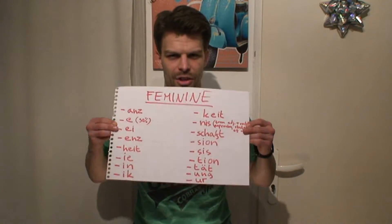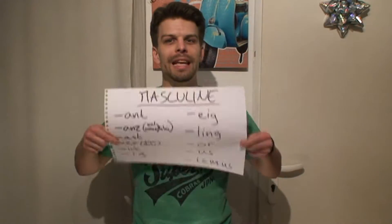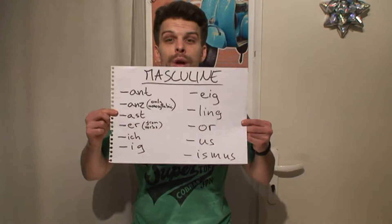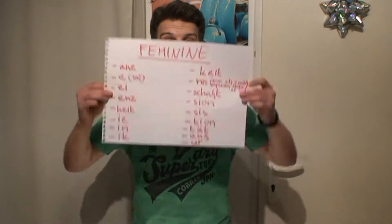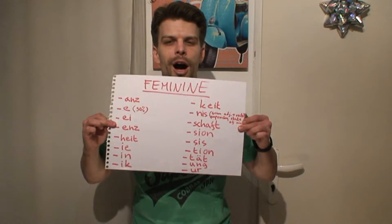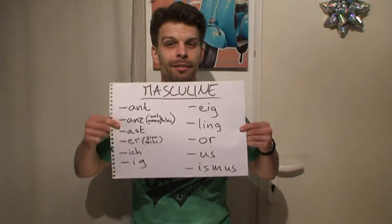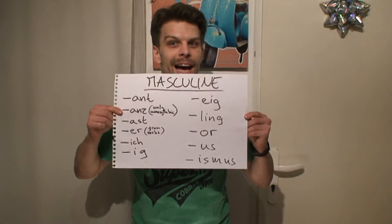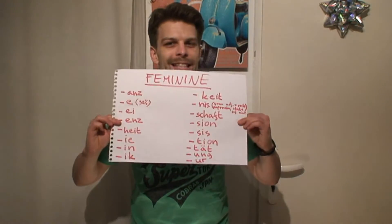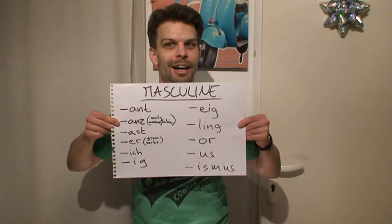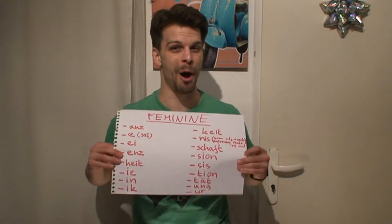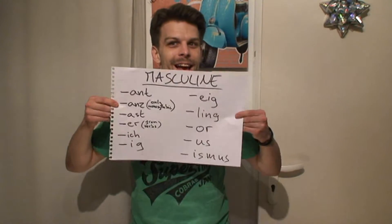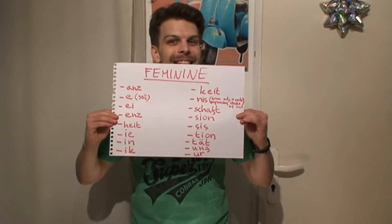And the indefinite article — so to summarize: for feminine we have 'die' as the definite article, and 'eine' as the indefinite article. For masculine we have 'der' and 'ein'. And we can keep going through the combinations.